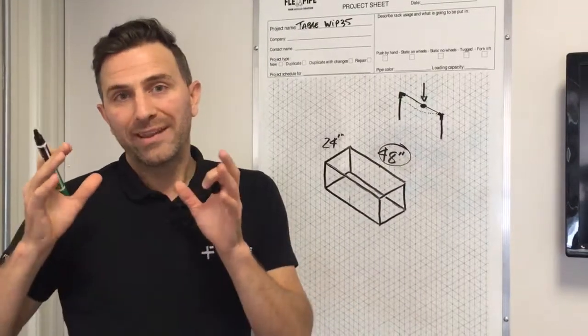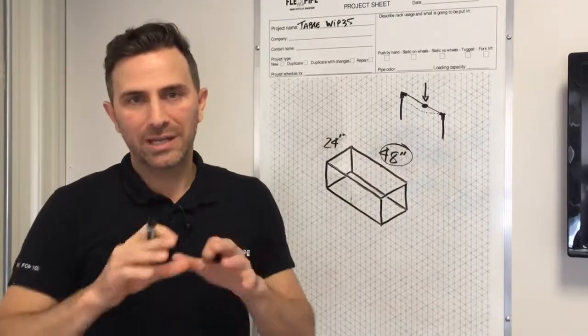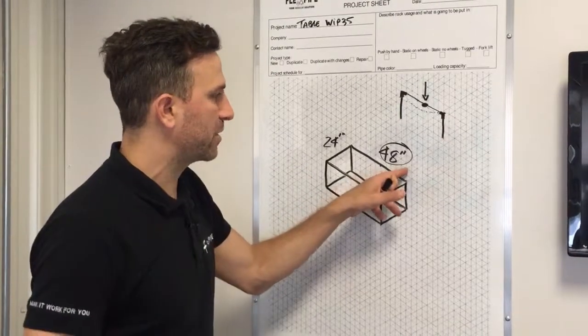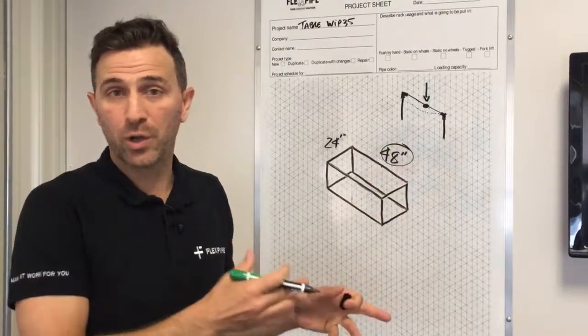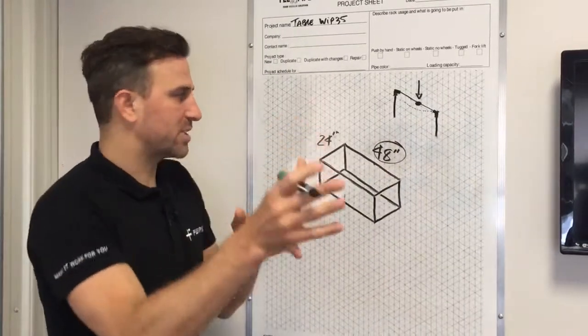and you go to, we have a tab online, it's a little chart, a loading capacity chart, and take the measurement that is closest to 48 if we don't have 48. Let's say you go to this chart,